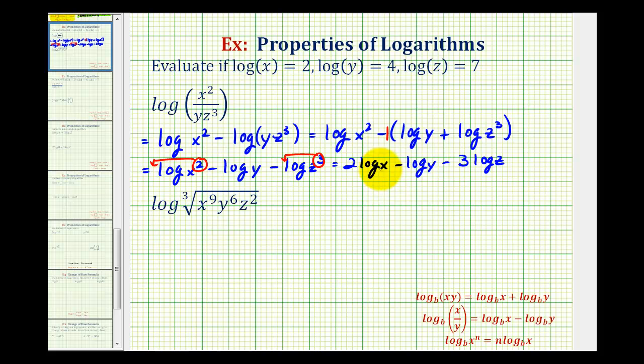Now we can perform substitution for log x, log y, log z to evaluate this. Log x equals two, so we have two times two minus log y equals four minus three times log z, and log z equals seven. So we have four minus four, that's zero, minus twenty-one, so this is negative twenty-one.